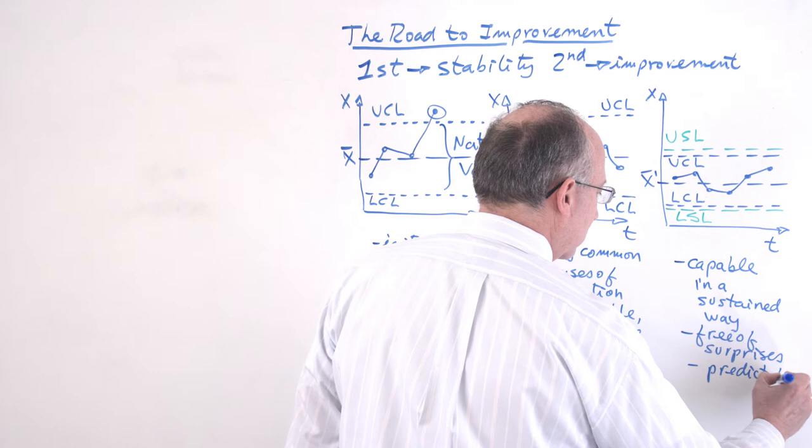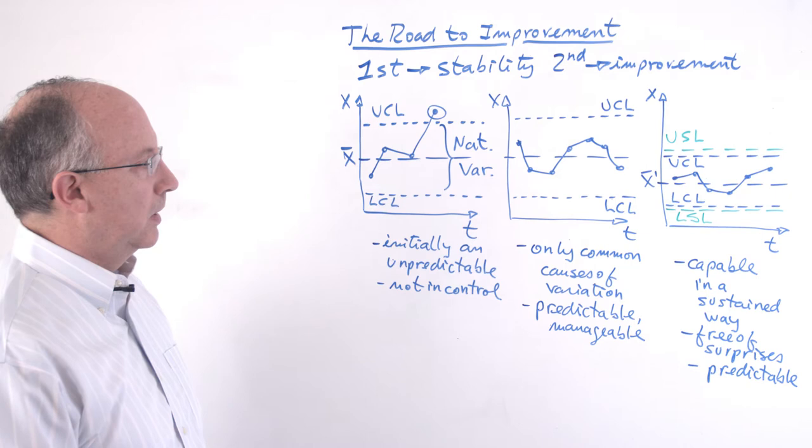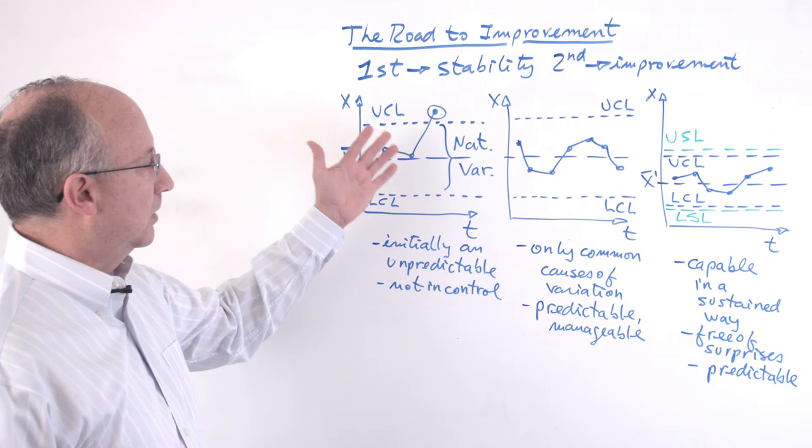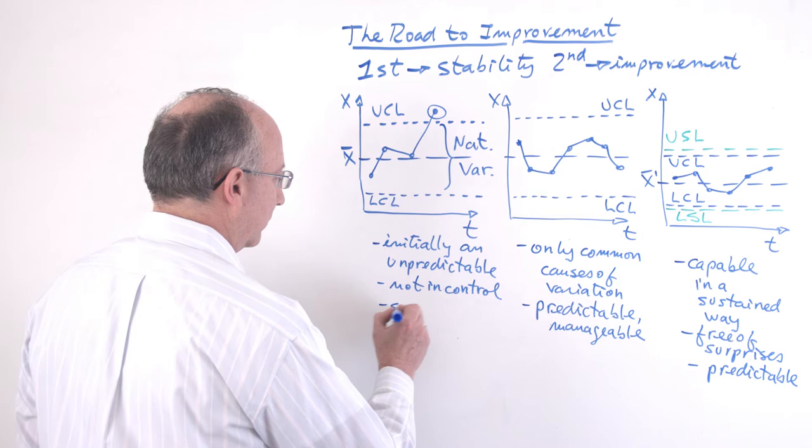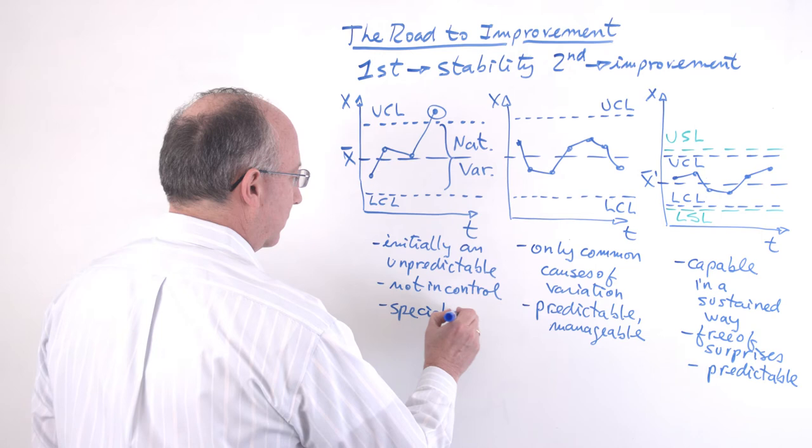And so this is really what we want to have. Now, how do we get from one to the other? There are many tools that can help us do this. When we need to identify what is a special cause of variation, which is what you would have here, I will add that to here now. So this means that the fact that the process is unpredictable, it's not in control, is because there are special causes present.